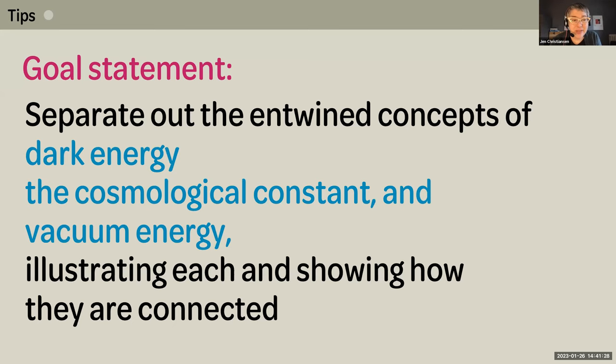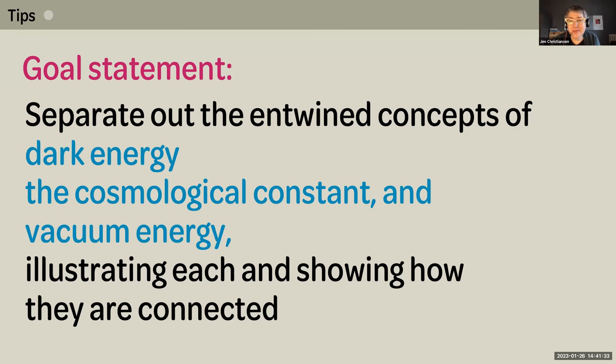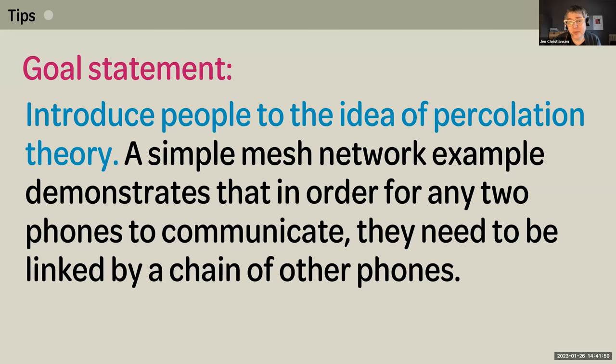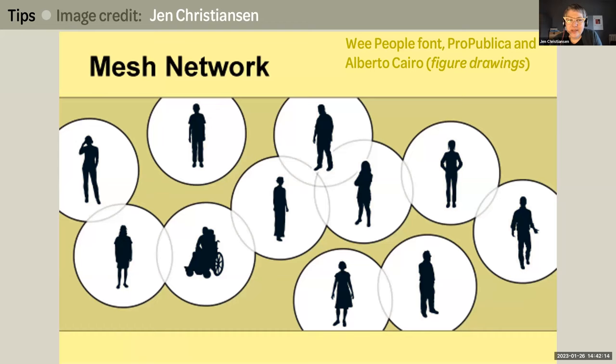Here are a few goal statements I've used to guide graphics in the past. This was one: separate out the entwined concepts of dark energy, the cosmological constant, and vacuum energy, illustrating each and showing how they're connected. This is the graphic that emerged from that goal statement, ultimately designed by Federica Fraga-Pain. Here's a closer look at a few details. Here's another goal statement: introduce people to the idea of percolation theory. A simple mesh network example demonstrates that in order for any two phones to communicate, they need to be linked by a chain of other phones. And this is the illustration that emerged from that goal statement.